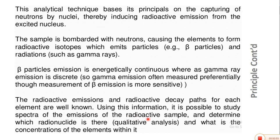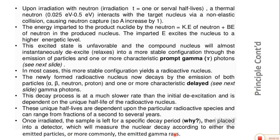The radioactive emission and decay path for each element are well known. Using this information, it is possible to study spectra of the radioactive sample emission, determine which radionuclide is present (qualitative analysis), and what is the concentration of the element (quantitative analysis). Upon irradiation with neutrons for one or several half-lives, a thermal neutron having energy of 0.025 electron volts interacts with the target nucleus via an inelastic collision, causing neutron capture.